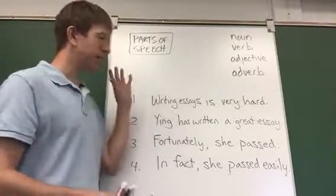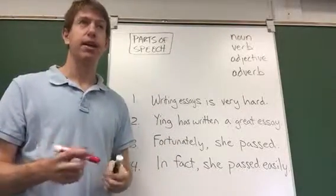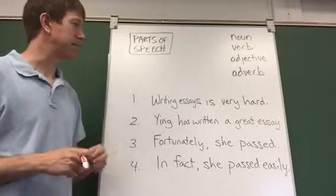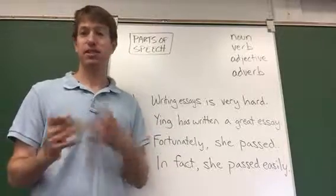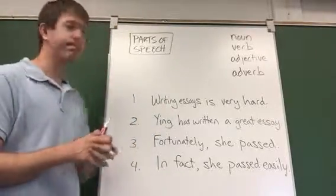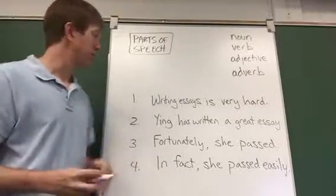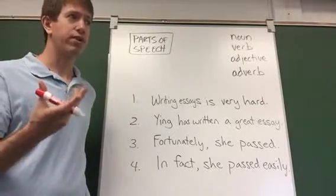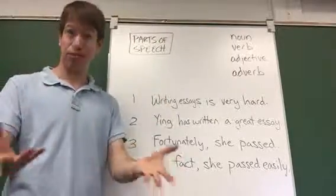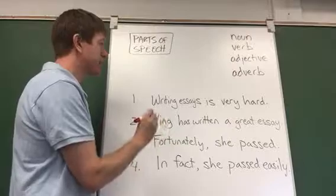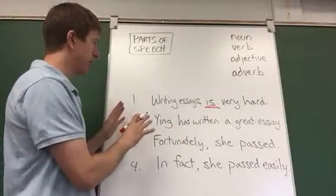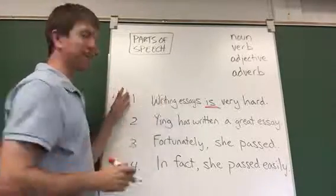Now as a review, as a little quiz, let's go through these four sentences and try to identify everything we can. This is good practice — you can do this with any sentence. Try to identify the main parts of speech. So my recommendation is: identify the subject and the verb of any sentence first. You know the subject is going to be a noun, and the verb is going to be a verb. So number one, where's the verb? Let's underline the verb. 'Is' — that's the verb. Now let's find the subject in this sentence. What's the subject?